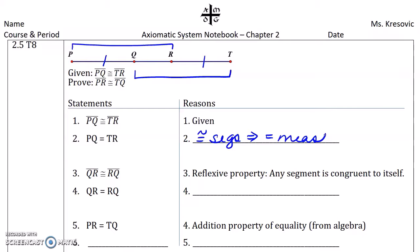Any segment is congruent to itself by the reflexive property, so QR is congruent to RQ, which means, again, if you have congruent segments, then you have equal measure.